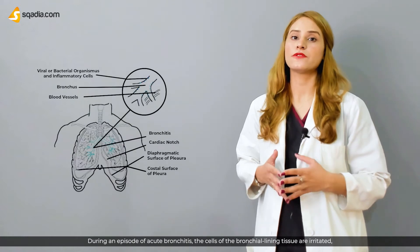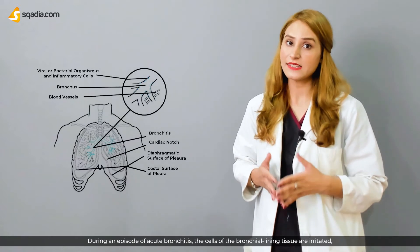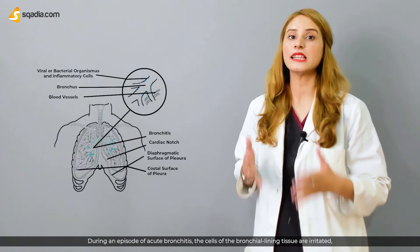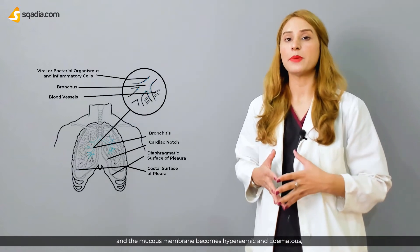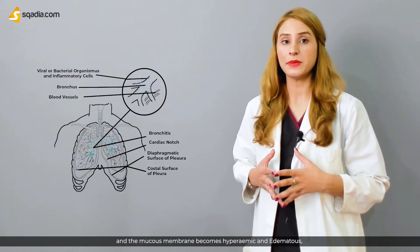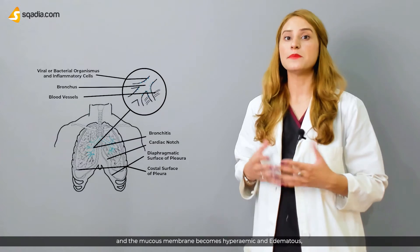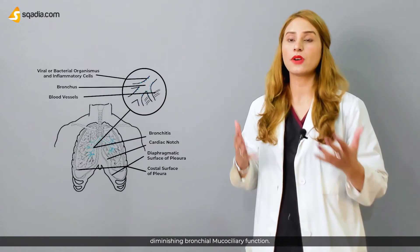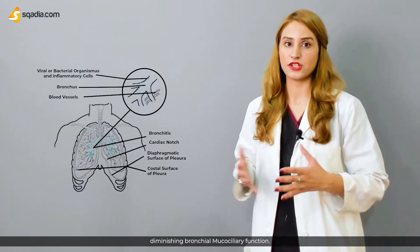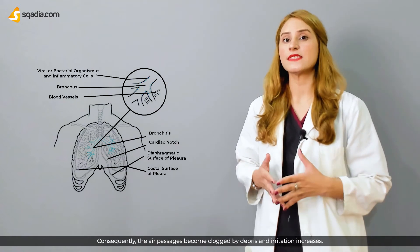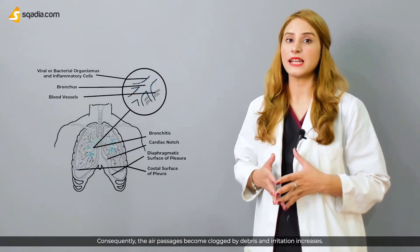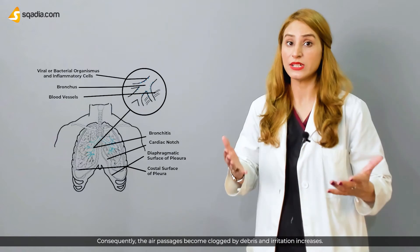Bronchitis can be acute or chronic. During an episode of acute bronchitis, the cells of the bronchial lining tissue are irritated and the mucous membrane becomes hyperemic and edematous, diminishing bronchial mucociliary functions. Consequently, the air passages become clogged by debris and irritation increases.